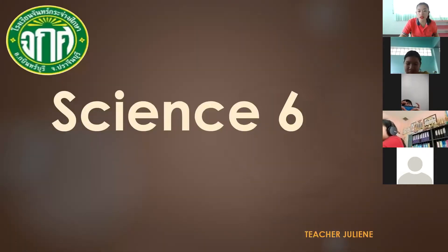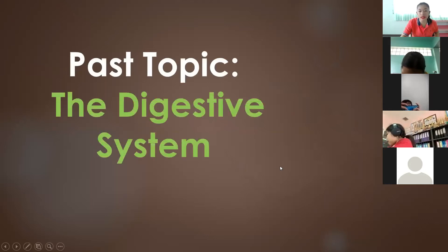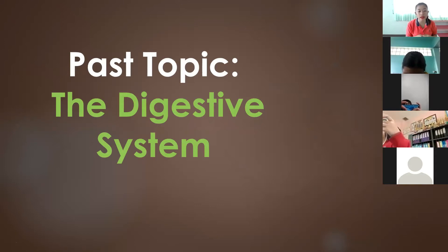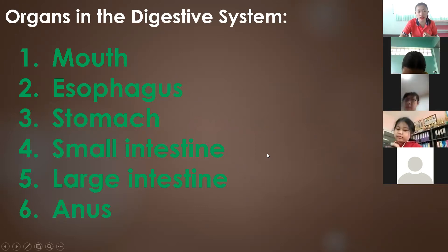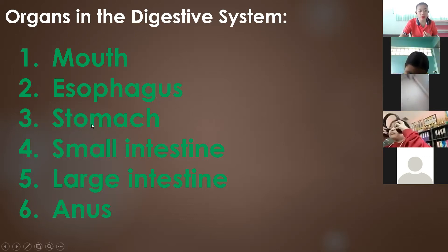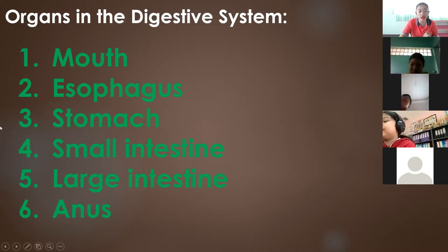Our subject is science. From our last topic, we learned about the digestive system. The digestive system is very important because it is the one that breaks down and spreads nutrients to our body. The organs in the digestive system are the mouth, esophagus, stomach, small intestine, large intestine, and the anus. These are the important organs in the digestive system.